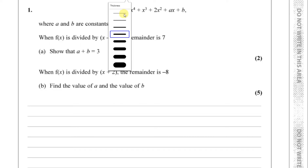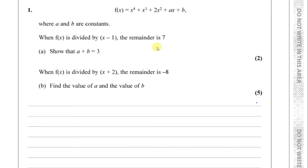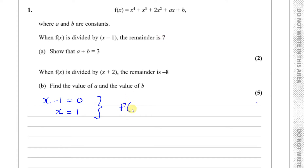The remainder theorem helps us save some time. What you have to do is substitute the value of x that comes out when you put the bracket equal to zero. When you divide by x minus 1 and set x minus 1 equal to 0, x equals 1. So when you put x equals 1 into the function, what should come out is 7 — meaning f(1) equals 7, because they told us the remainder is 7.